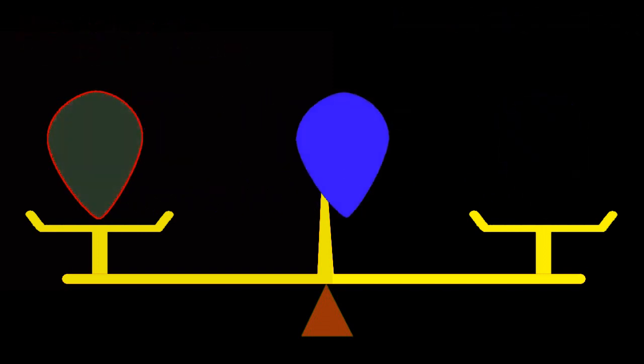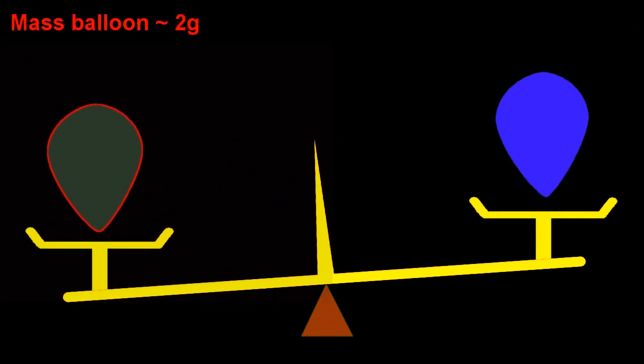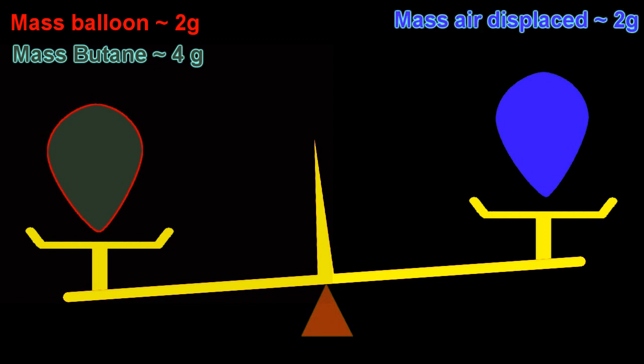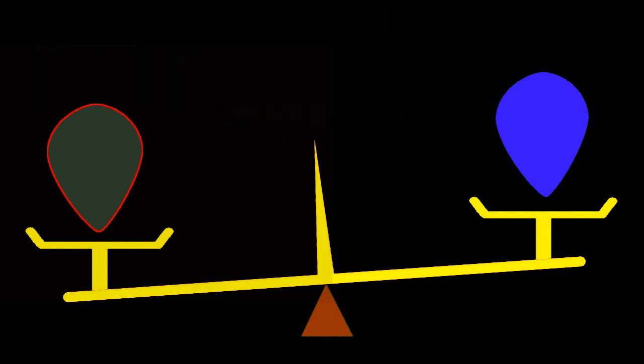So when I do the same thing with butane, I now have my two gram balloon with my two liters of butane weighing about four grams. So the balloon weighs two grams, it's displaced about two liters of air, giving us about two grams of buoyancy, and we have four grams of butane in the balloon. So the total weight is four grams. That is, any object gets free buoyancy of the mass of air that it displaces.